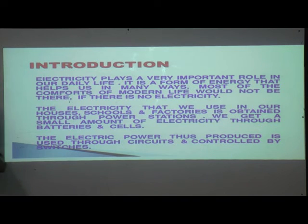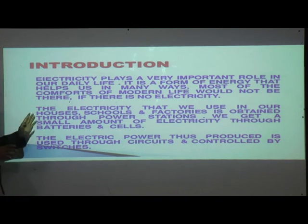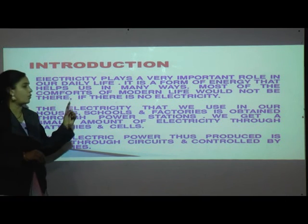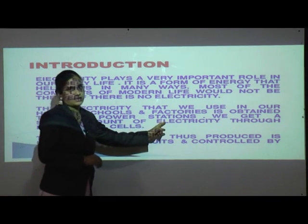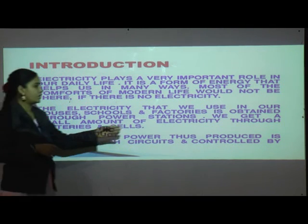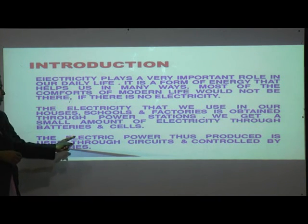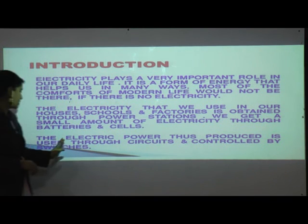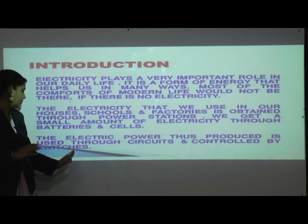We need electricity at every stage and for every work. The electricity we use in our houses, schools, and factories is obtained through power stations. We also get a small amount of electricity through batteries and cells. The electric power produced is used through circuits and controlled by switches.